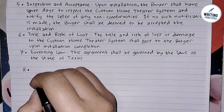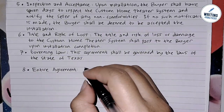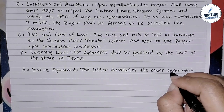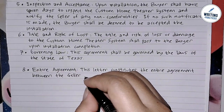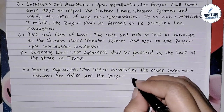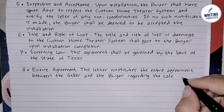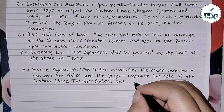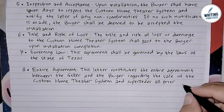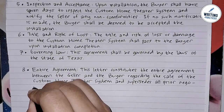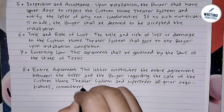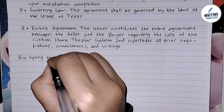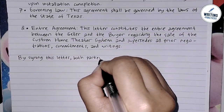The last point is the entire agreement clause. State that this document represents the complete and final agreement between the parties. This clause prevents either party from claiming that there were additional unstated terms that should be enforced. For example: '8. Entire Agreement: This letter constitutes the entire agreement between the seller and the buyer regarding the sale of the custom home theater system and supersedes all prior negotiations, commitments, and writings.'